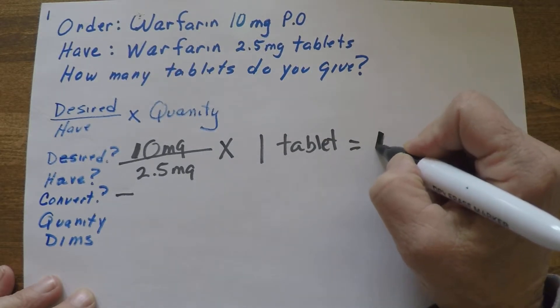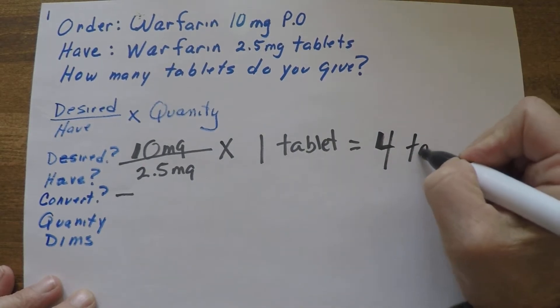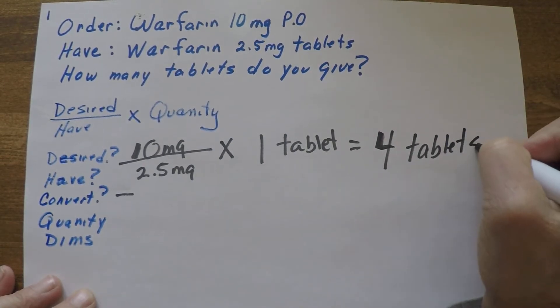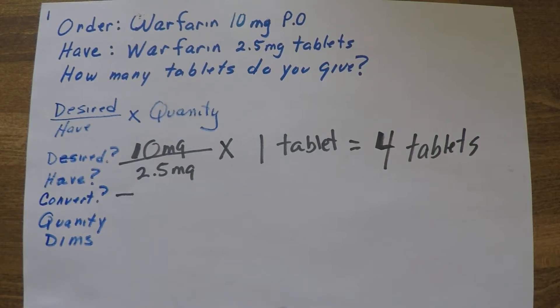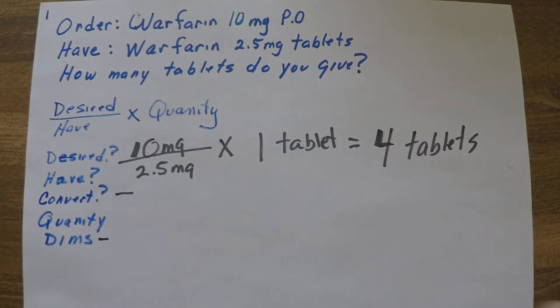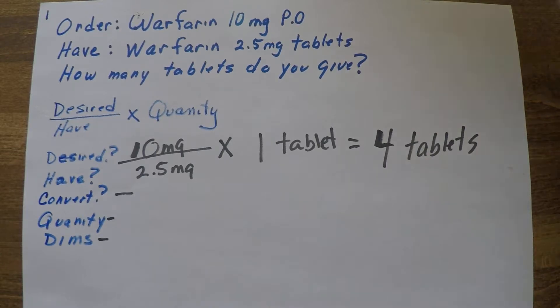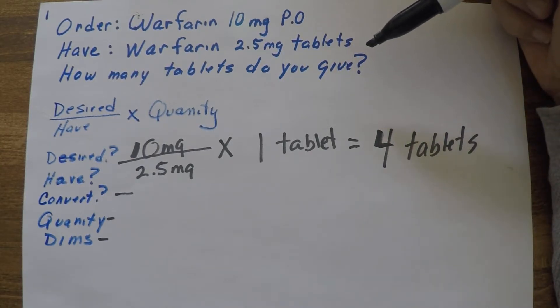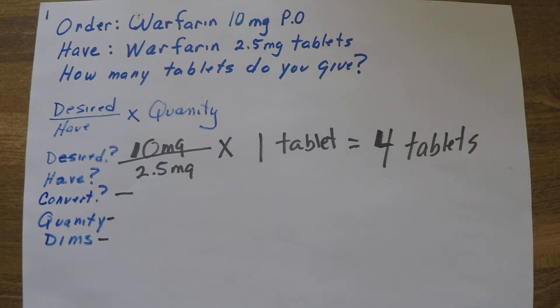And then you always want to do the DIMS test - does it make sense? Just kind of think about it. If I have 2.5 milligram tablets, if I'm giving four tablets it would make sense that it's going to be more than one, right? That's going to be several tablets to get up to 10 milligrams. So that makes sense.